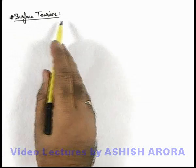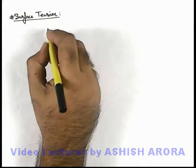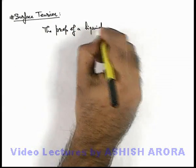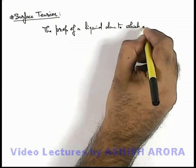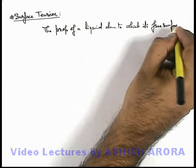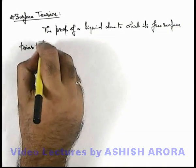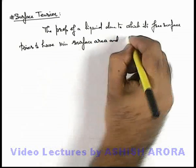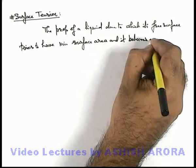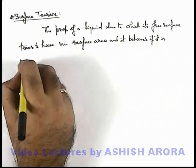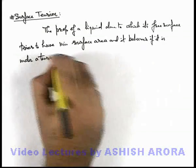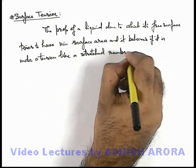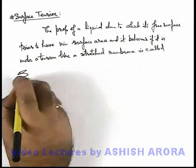Let's start with the topic of surface tension. About surface tension we can write that the property of a liquid due to which its free surface tries to have minimum surface area, and it behaves as if it is under a tension like a stretched membrane, is called surface tension.